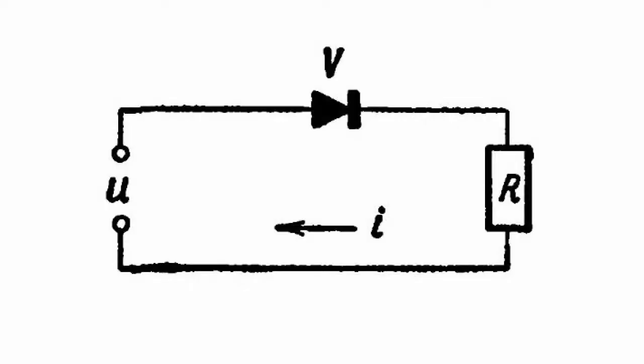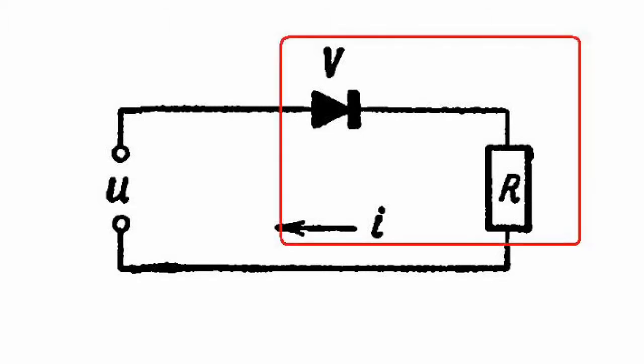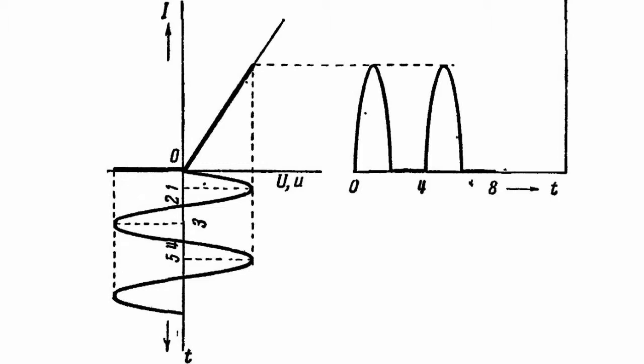On the picture you can see a basic half-wave rectifier circuit. Rectifier V is in series connection with load R. The disadvantage of the half-wave circuit is that the voltage is not fully used. In the case of negative half cycles, the circuit doesn't work at all, which is why it is not very popular.